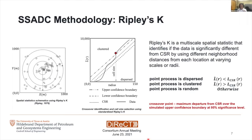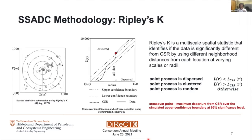Explaining how the cell sizes were chosen using these two methods explains the workflow for testing SSA-DC. First, we construct a 2D geological truth model using sequential Gaussian simulation, creating multiple realizations combining random and regular sampling with varying degrees of bias using rejection sampling. We determine the optimal cell size for nearest neighbor as the inter-sample distance at the elbow, and for Ripley's K it's the distance at the crossover point. Then we calculate the declustered mean at these optimal cell sizes and estimate the relative error to quantify accuracy.